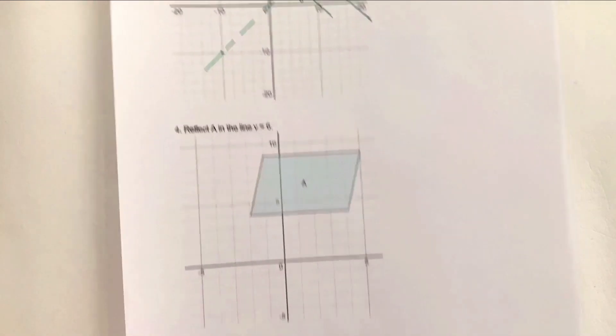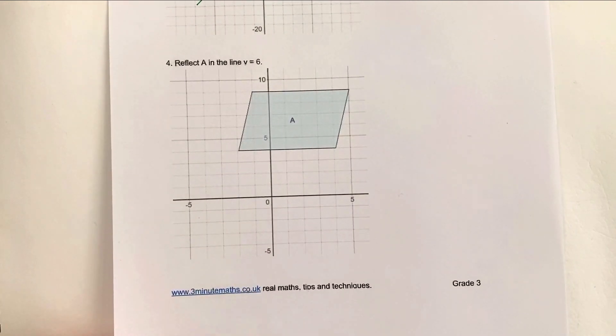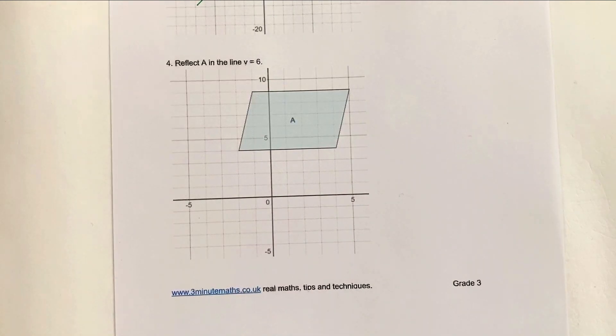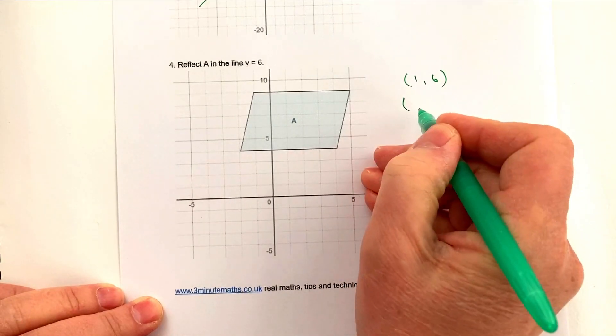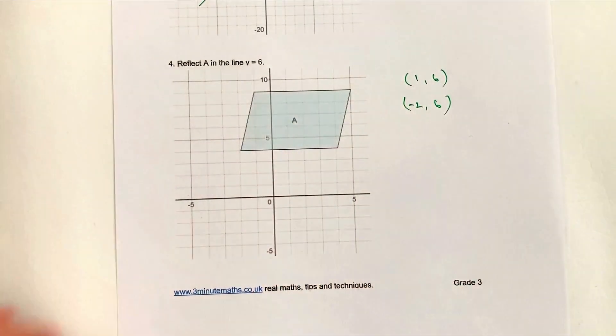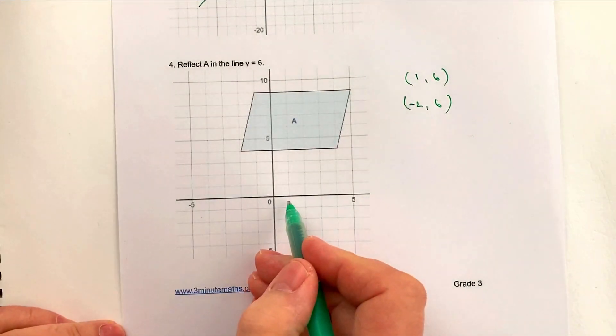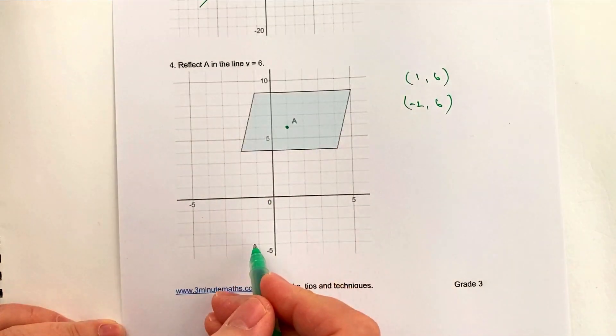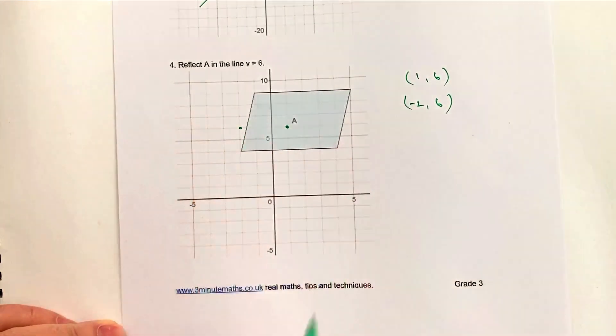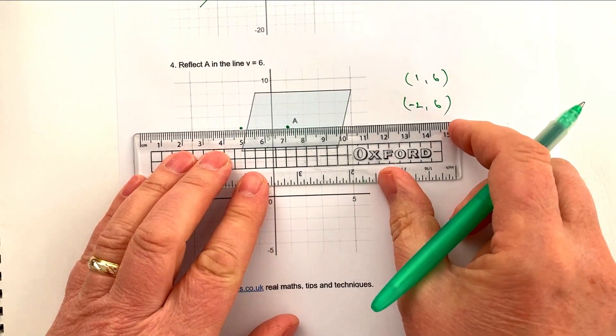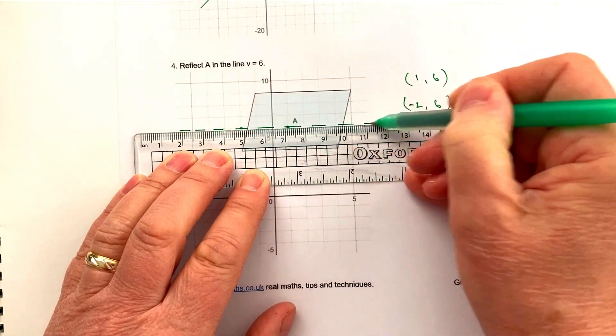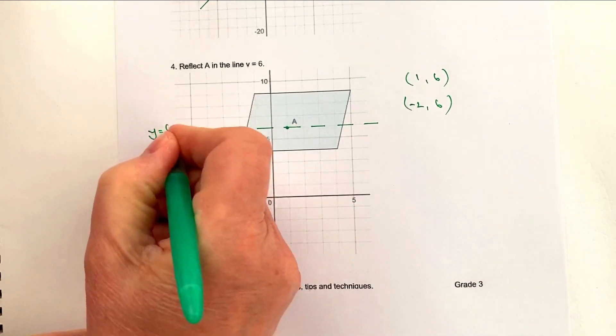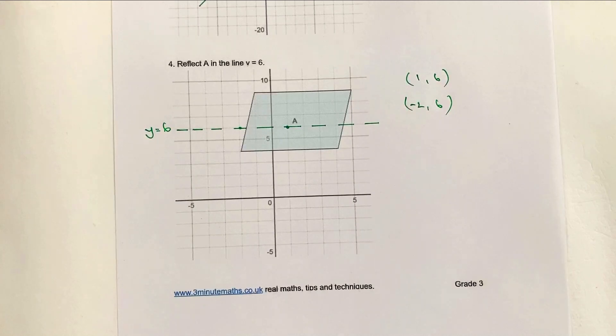Let's look at question number four. It says reflect shape A in the line y equals six. We need to know where y equals six is, so again you can do a couple of coordinates: when x is one, y is six; when x is minus two, y is also six. Let's plot those two coordinates. I've got one and six here, and minus two and six here. This is slightly tricky, but basically my mirror line is actually going to be along like this. This is where y equals six, so it's going to be a quite an interesting shape.